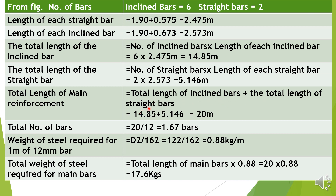The total length of the inclined bars equals number of inclined bars multiplied by length of each inclined bar: 6 × 2.475 = 14.85 meters. The total length of the straight bars equals 2 × 2.573 = 5.146 meters. Total length of main reinforcement equals 14.85 + 5.146 = 20 meters. Total number of bars required, considering bar length of 12 meters: 20 ÷ 12 = 1.67 bars. Weight of steel for 12 mm main bar: D²/162 = 144/162 = 0.88 kg per running meter. Total weight of steel for main bars: 20 × 0.88 = 17.6 kg.